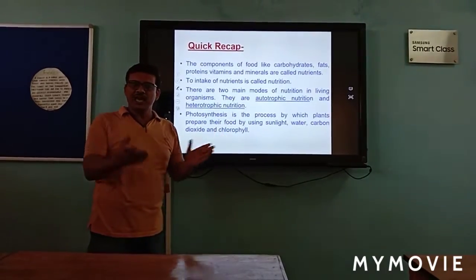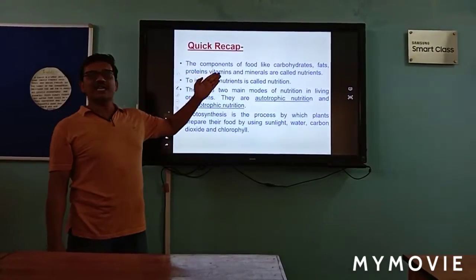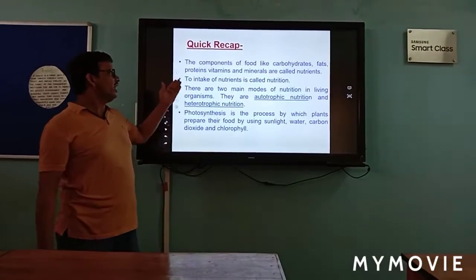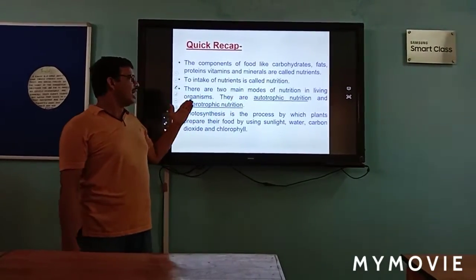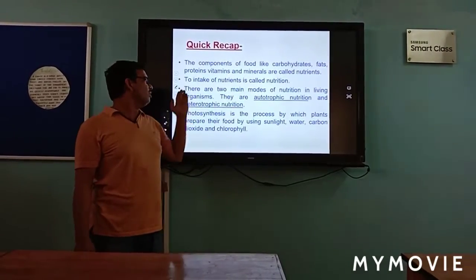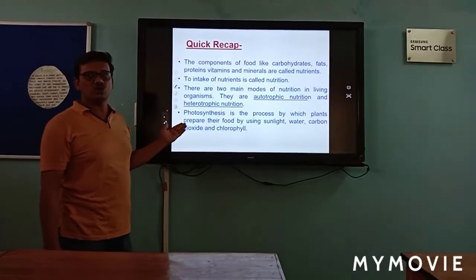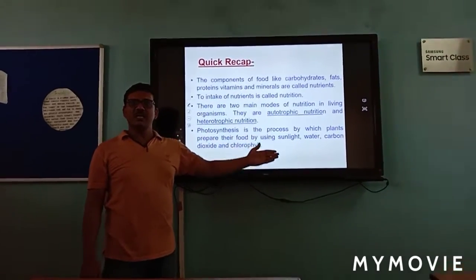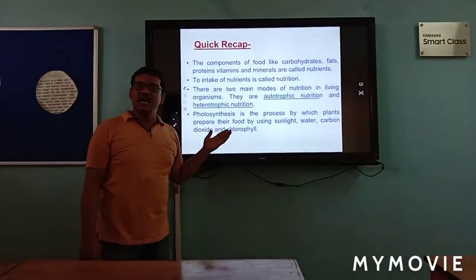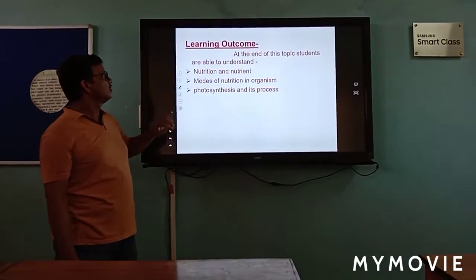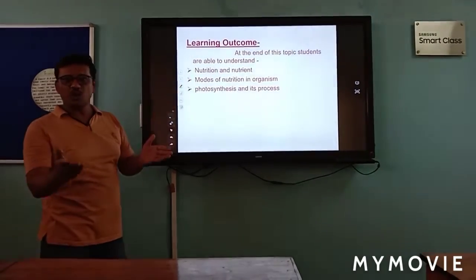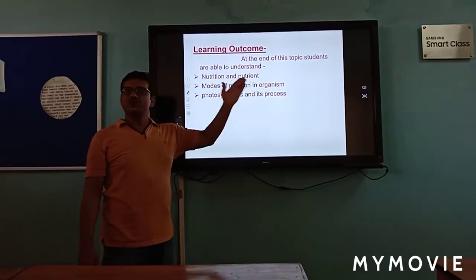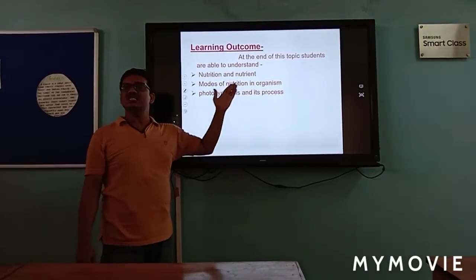Quick recap: the components of food like carbohydrate, protein, fat, vitamins, and minerals are called nutrients. To intake nutrients is called nutrition. There are two main modes of nutrition — autotrophic and heterotrophic nutrition. Photosynthesis is the process by which plants prepare their food using sunlight, water, carbon dioxide, and chlorophyll. At the end of this topic, students are able to understand nutrients and nutrition, modes of nutrition in organisms, and photosynthesis and its process. Thank you very much.